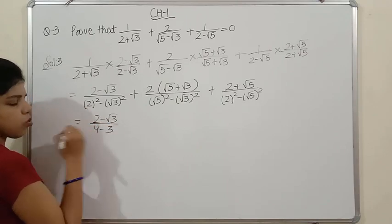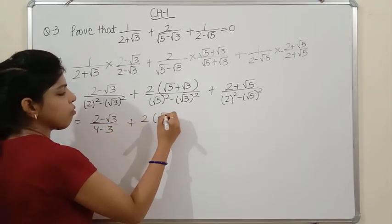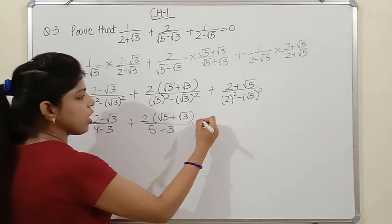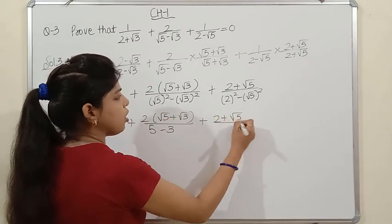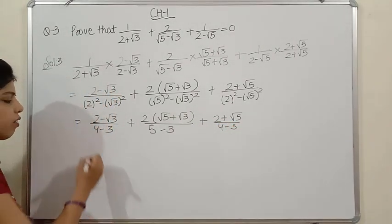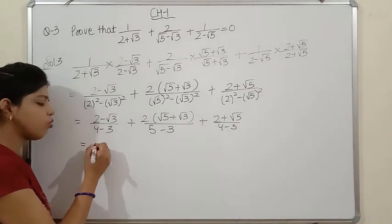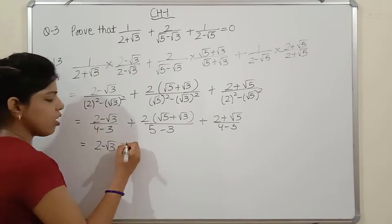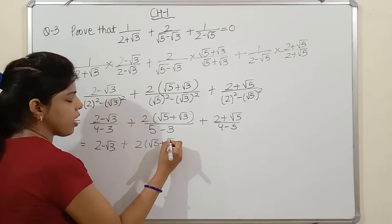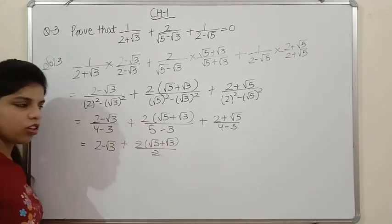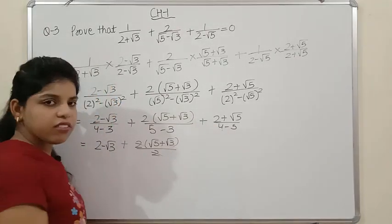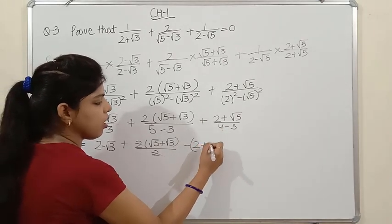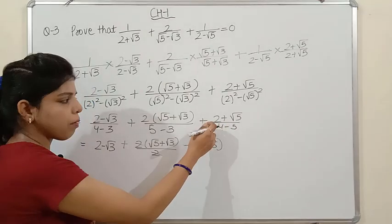After rationalizing: first term gives (2-√3)/(4-3) = (2-√3)/1 = 2-√3. Second term gives 2(√5+√3)/(5-3) = 2(√5+√3)/2 = √5+√3. Third term gives (2+√5)/(4-5) = (2+√5)/(-1) = -(2+√5). We don't need to write denominator 1.